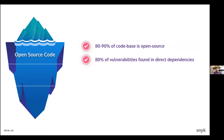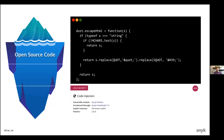Beyond our own code, there is the open source code that lies beneath the iceberg. We may not think about it too much in our day-to-day coding activities because some of it is abstracted away and we may not even be aware of the libraries we use, but it really makes up the majority of the code we write — up to 90% of today's code across different ecosystems like NPM, Ruby, and Maven. Most of the time when we find vulnerabilities, we find them in open source packages coming from transitive dependencies.